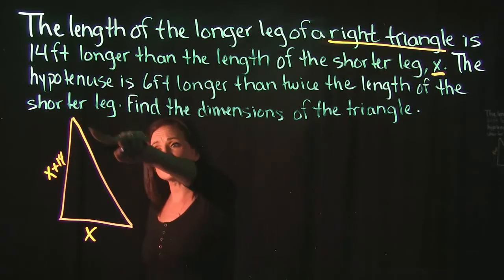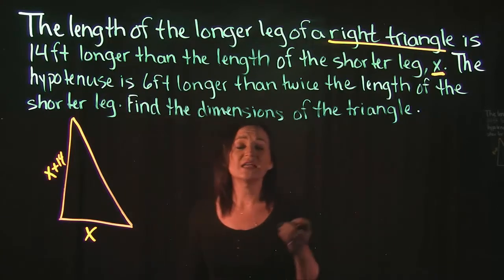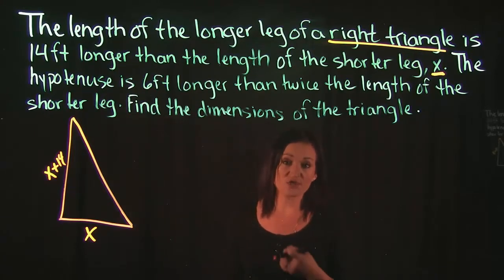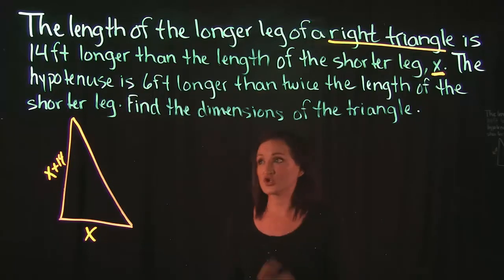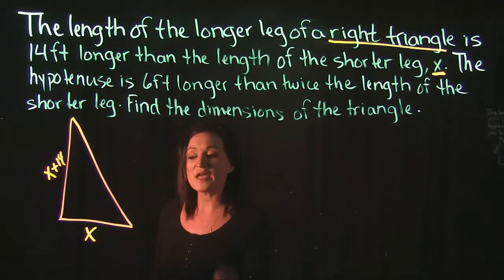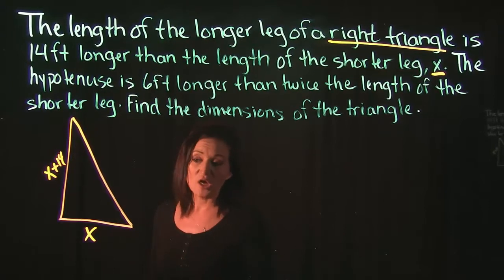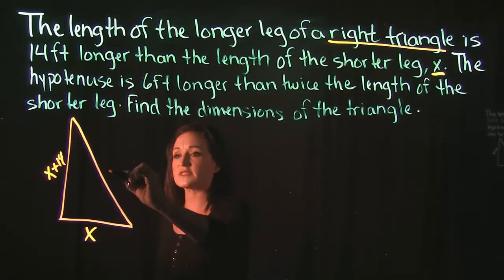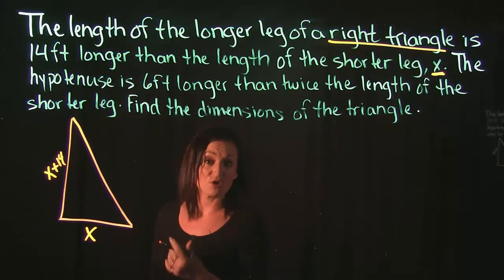And then it says the hypotenuse which is always your diagonal side is 6 feet longer than twice the width of the shorter leg. So if I want twice the shorter side that means I want to double it, I'm going to multiply it by 2. So that's 2x.